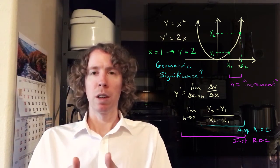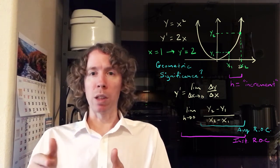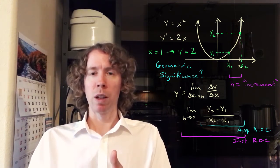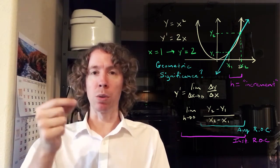And the difference between them is H, the distance between them is H. Then we really are looking at Y2 minus Y1 over X2 minus X1. That's just the slope of the line that goes between those two points. It goes through those two points.